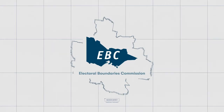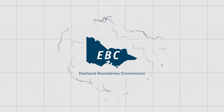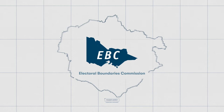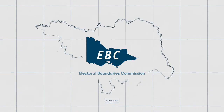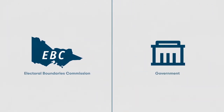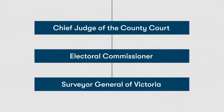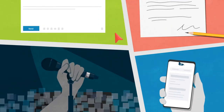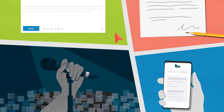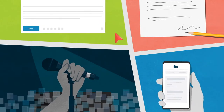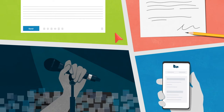Who draws the boundaries? The Electoral Boundaries Commission, or the EBC, decides the boundaries and the names for the electorates. The EBC is independent of the government and is made up of the Chief Judge of the County Court, the Electoral Commissioner, and the Surveyor General. The EBC invites submissions from Victorians and takes submissions into account when deciding on the boundaries.